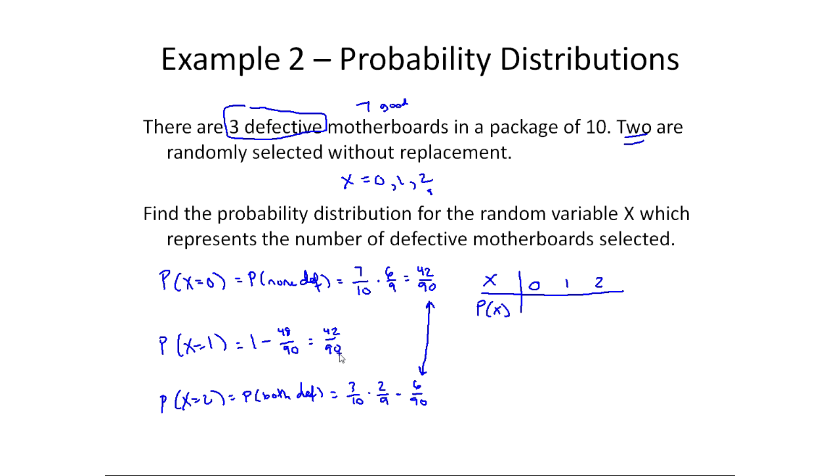Well, I did some quick calculations. 42 out of 90 is approximately 0.47, and so that's for x equals 0. For x equals 1, and then 6 out of 90 is approximately 0.07.